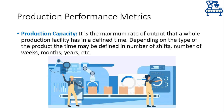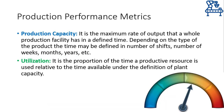Moving on with the production performance metrics, we arrive at production capacity — the maximum production rate a particular setup can have. This can be defined in hours, days, months, or years. By combining the production rate and production capacity, we can define utilization of the factory resources. Utilization is the proportion of time a production resource is used relative to the time available under the definition of plant capacity. For example, if the plant capacity is 1000 units per day whereas current production rate is 700 units per day, then resources are being utilized 70%. A low utilization means the factory should aim to get more orders and fully utilize the installed setup.